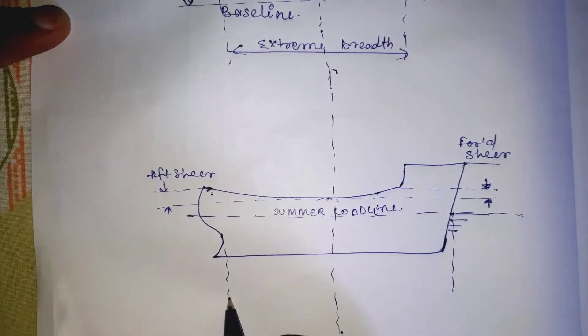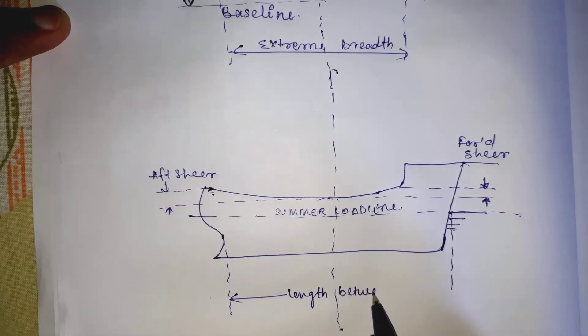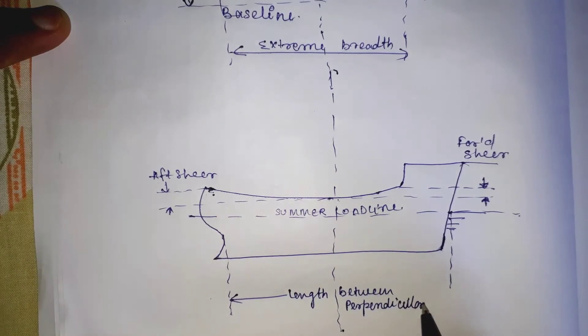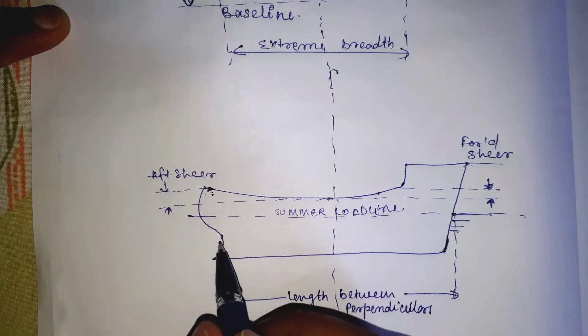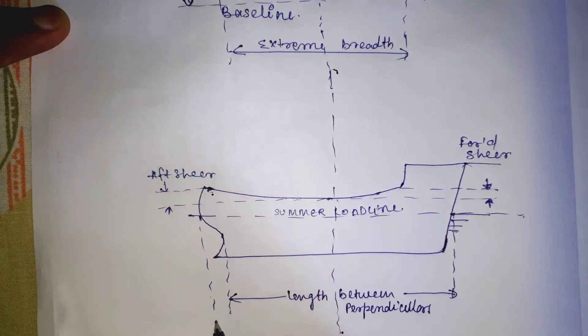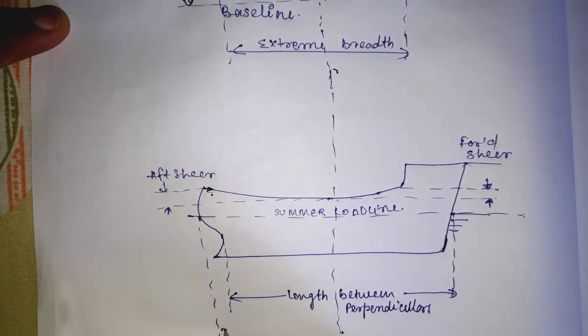The aft perpendicular is the perpendicular drawn to the waterline through the point where the aft side of the rudder post meets the summer load line. The forward perpendicular is the perpendicular drawn to the waterline at the point